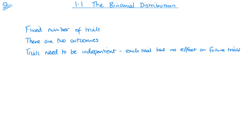The final thing is that the probability must remain constant. Going back to the dice example, the probability of rolling a six is one sixth, therefore the probability of not rolling a six is five sixths. That probability remains constant throughout. If the probability was changing, then I could not use the binomial distribution.